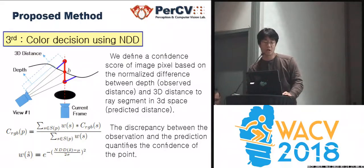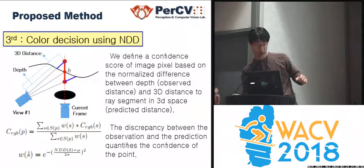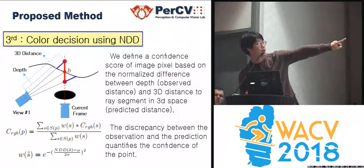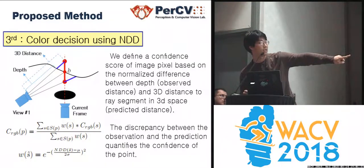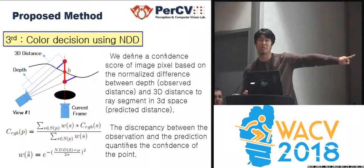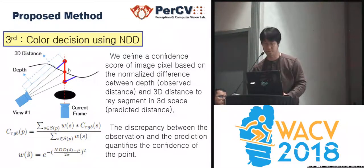The problem is that not all those points are high quality, so we have to assign some kind of confidence or penalty. The last step is color calculation using our NDD. NDD gives confidence on those potential background points. For instance, a potential point at the top of the ray segment shows a large difference between depth and 3D distance, meaning it has very low confidence. But point B, which actually intersects the background, has an almost identical 3D distance and depth, giving a small NDD score which works as a kind of weight. We give this weight to all potential points and accumulate all color information to calculate the final color value to fill in the missing part.